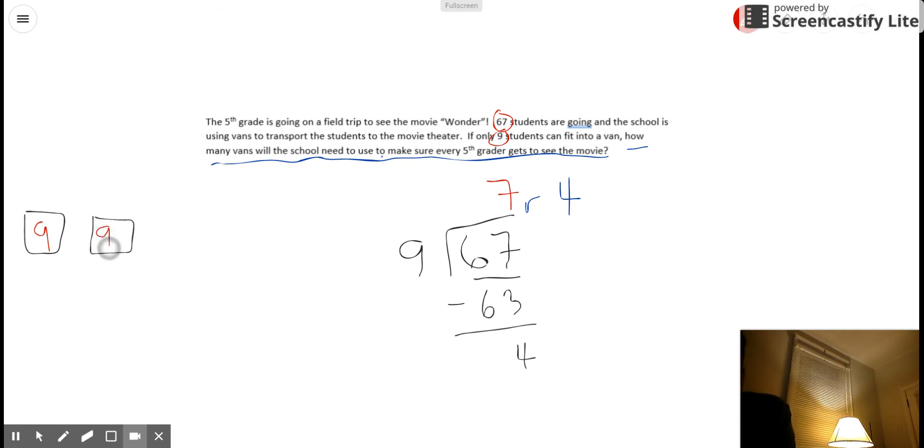And then I have 2 vans, and that holds 9 students. So so far, 18 students are going to the movie. Now I have 3 vans. So now 27 students are on their way to the movie theater.